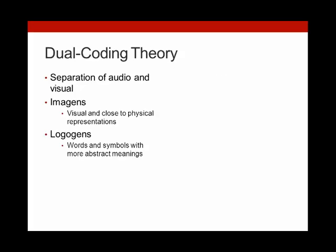Paivio theorizes that there is a separation between audio and visual interpretation in our minds. He calls this dual coding theory. The first of these two cognitions he called imagens, which are visuals which we interpret close to their reality. When we see a cat in real life or in a picture, our mind sees a four-legged animal with whiskers. Logogens, however, are more abstract — these are the words and symbols we use every day. When we see the word 'cat,' we interpret the word to mean a four-legged animal with whiskers, even though the word itself is just a series of symbols.